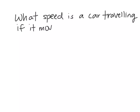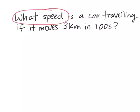What speed is a car traveling if it moves three kilometers in 100 seconds? So here we are solving for speed again, and we have a distance and we have a time. Now our distance and our time are not in the correct units because we cannot use kilometers per second as a unit of speed. It's not a typical unit. So we're going to have to either convert kilometers into meters or seconds into hours.